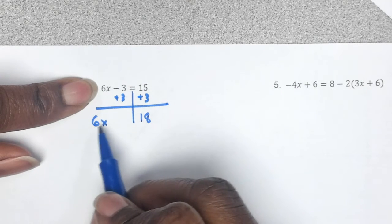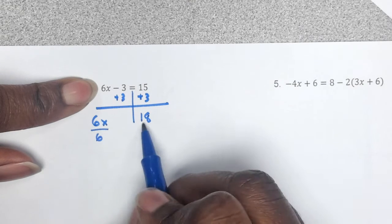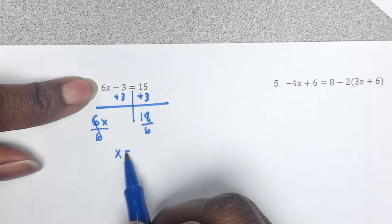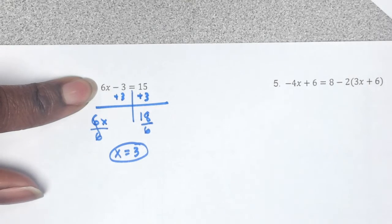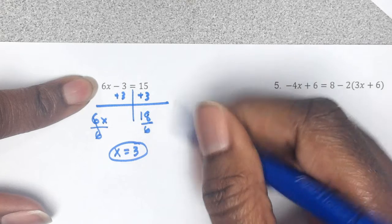Now remember, how do you get this 6 away from this x? Divide by 6, divide by 6. So that's going to be x equals 3. Yes, x equals 3. So the basic ones like this, great, easy to do. You can do it real quick.